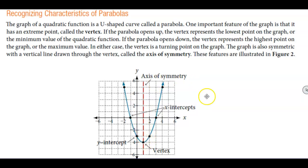If the parabola opens down then the vertex represents the highest point on the graph or the maximum value. In either case the vertex is considered the turning point on the graph.